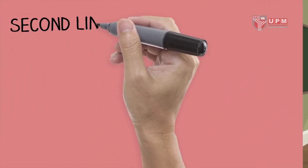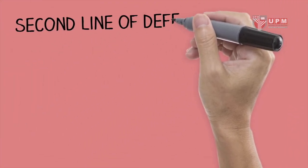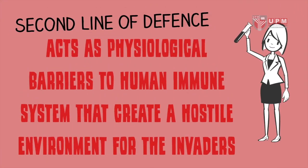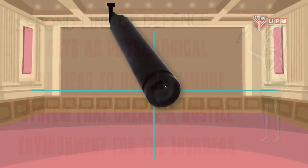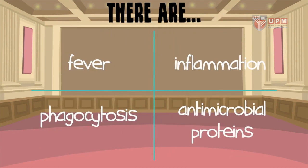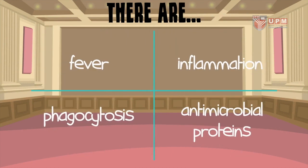Next, the second line of defense acts as physiological barriers to the human immune system that create a hostile environment for invaders. There are four components: fever, inflammation, phagocytosis, and antimicrobial proteins.